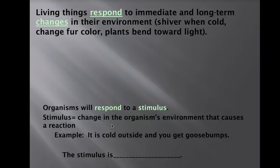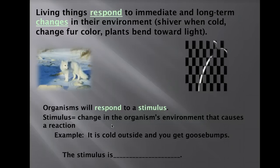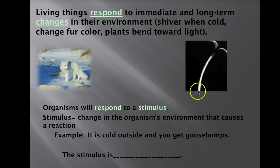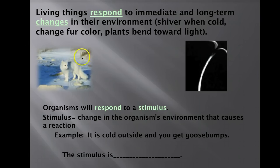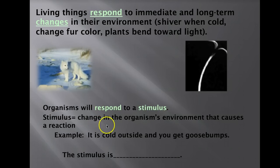Living things can respond to immediate and long-term changes in their environment. For example, if light is put in one corner of a room, a plant is going to grow towards the light — you can see this plant curving, and over time it will turn toward that light. This fox changes its color in wintertime — it responds to the stimulus of the environment being white by having a white fur coat in winter and a brown fur coat in summer.